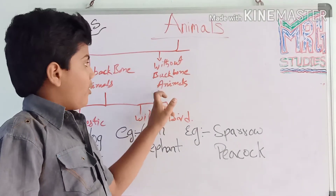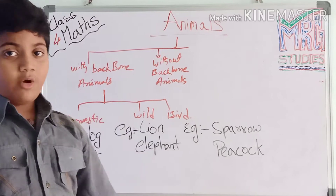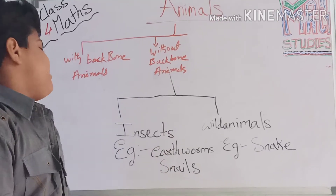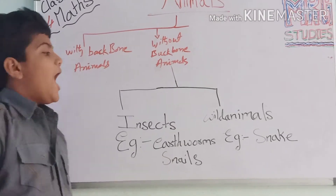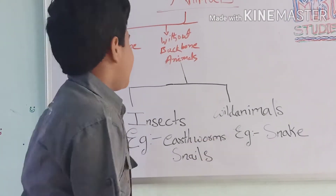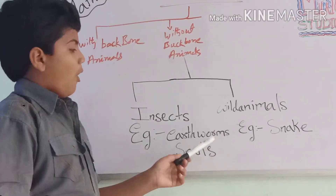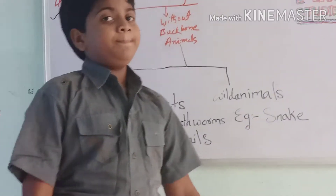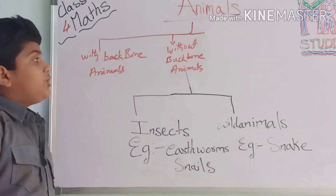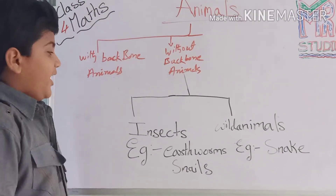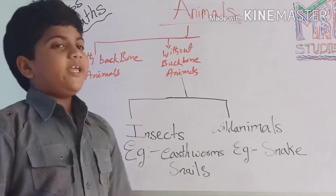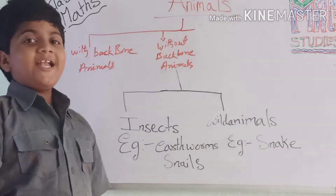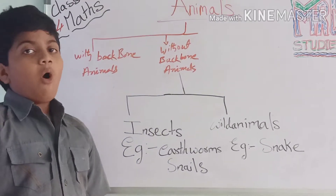Without-backbone animals. Without-backbone animals include insects and some wild animals. Examples: snake. Without a backbone, they cannot stand and cannot walk. They move like this only — they turn around on the ground.